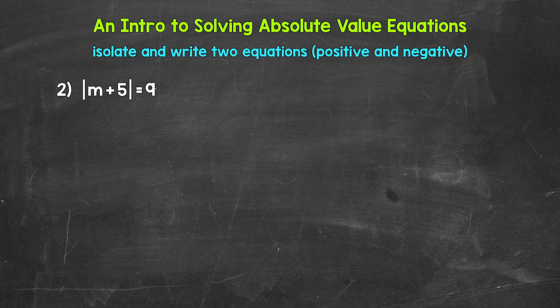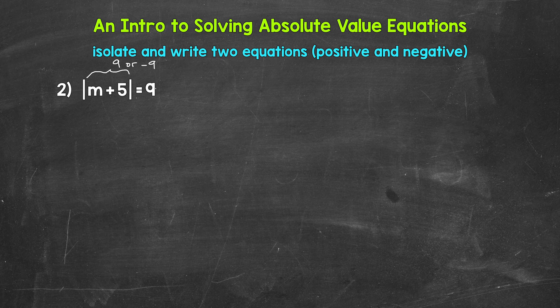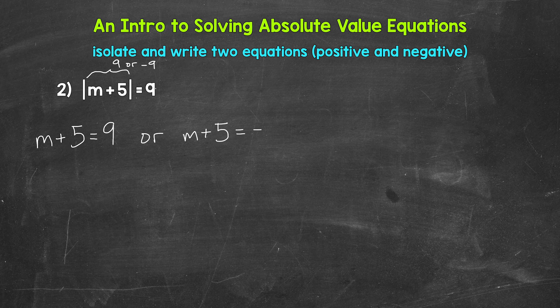Taking a look at number two, we have the absolute value of m plus five equals nine. Our absolute value is isolated, so we can move on to writing two equations. This absolute value equals nine, so m plus five needs to equal positive nine or negative nine. So we need two equations: m plus five equals nine, or m plus five equals negative nine.